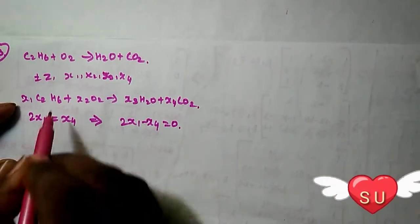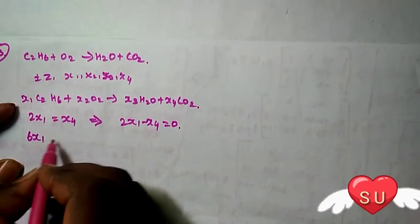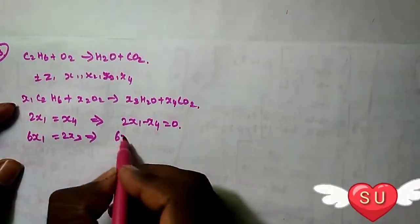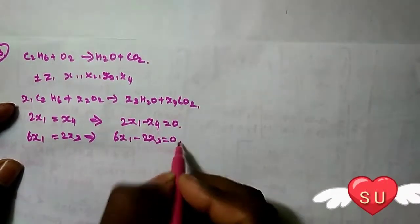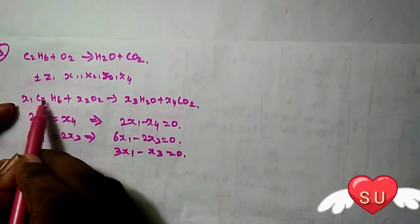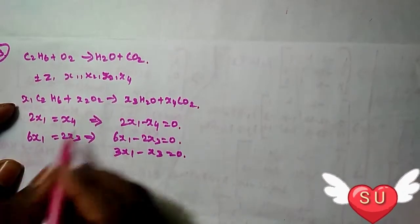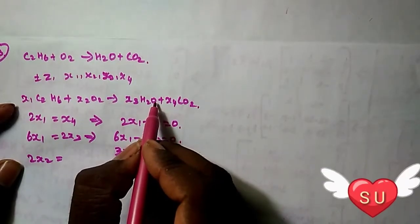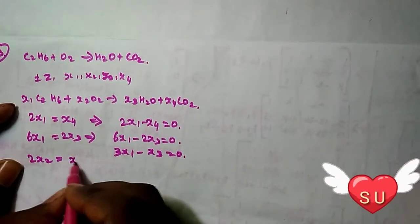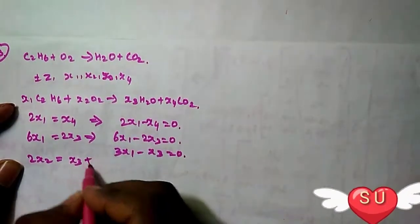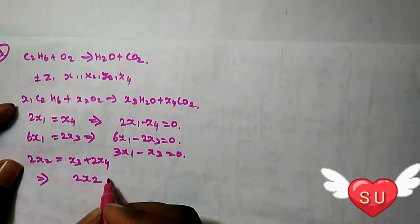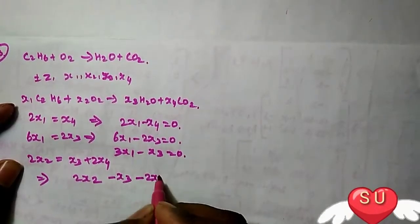Next, hydrogen: 6x1 equals 2x3. Next, oxygen: 2x2 equals x3 plus 2x4. So we have 2x2 minus x3 minus 2x4 equals 0.